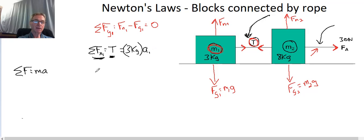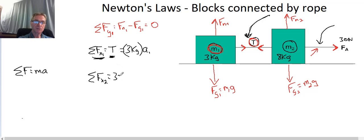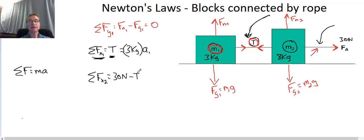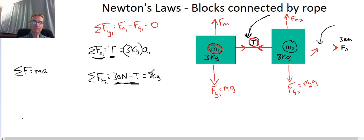Now for block 2, the sum of forces in the x-direction: the positive force pulling to the right is 30 newtons, and we have a negative force T pulling to the left. So it's 30 newtons minus T. There's no friction, so no other x-direction forces. That equals M times A, where M is 8 kilograms, giving us: 30 newtons minus T equals 8 kilograms times A2.